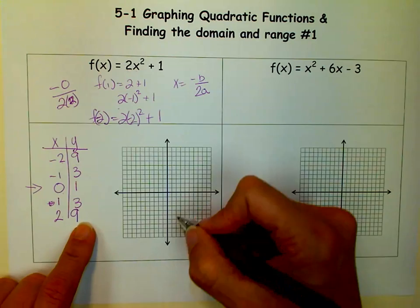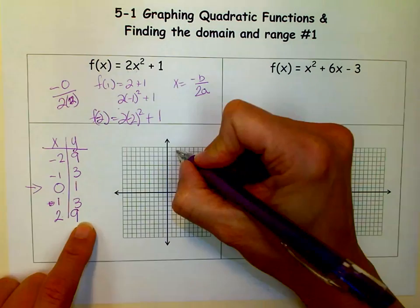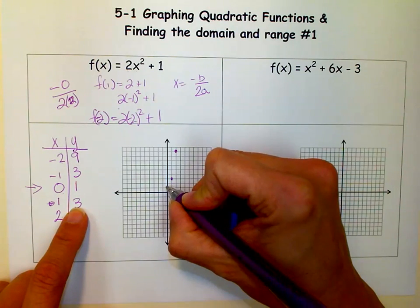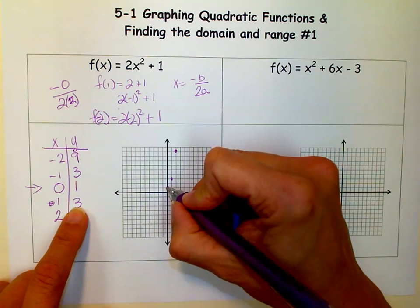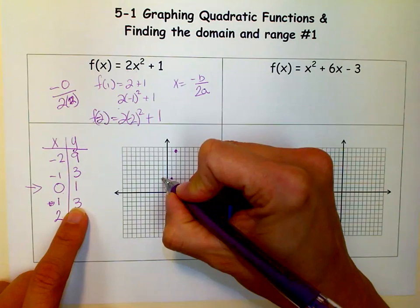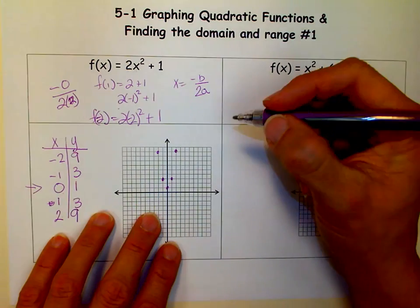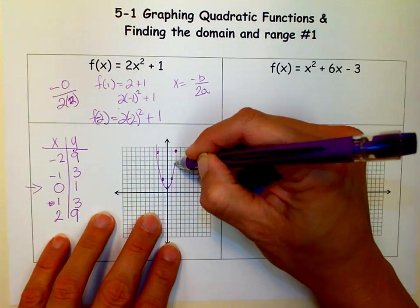So now I can graph my points. So I go over 2 and up 9, over 1 and up 3, over 0 not go anywhere and up 1, and then over 1 up 3, and over to the left negative 2 and up 9. And then I can connect the dots.